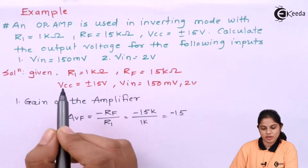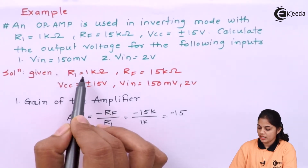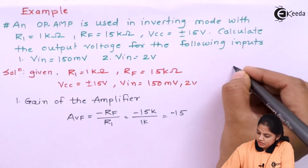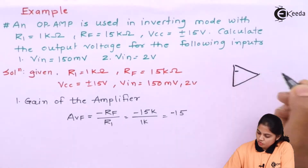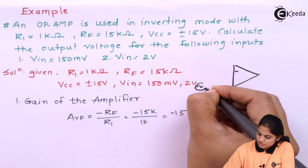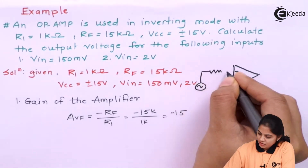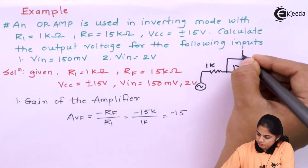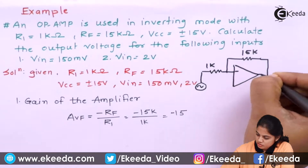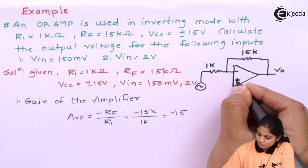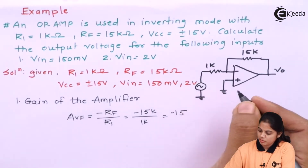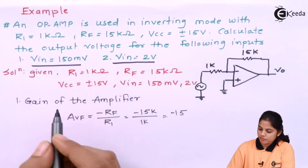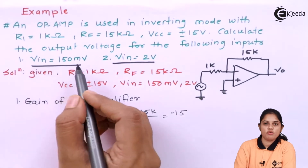So first we will list down the given parameters. R1 is equal to 1 kΩ. According to the given parameters, we can draw the diagram of the inverting amplifier. The input voltage is supplied through resistance R1, where R1 is 1 kΩ and Rf is 15 kΩ, connected to the output V0. The positive terminal is grounded. First the input will be 150 millivolt and secondly it will be 2 volt.